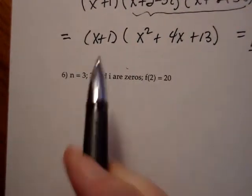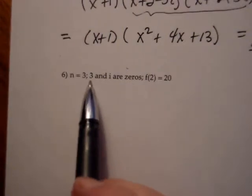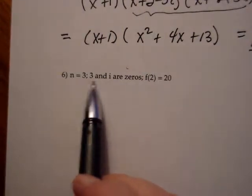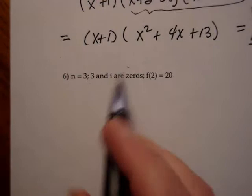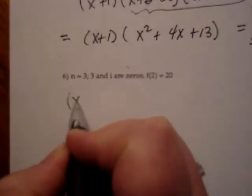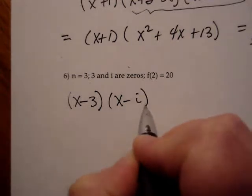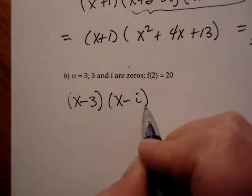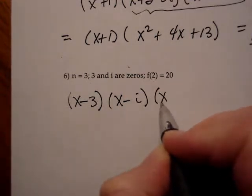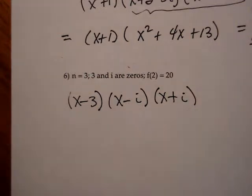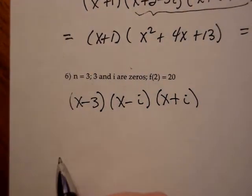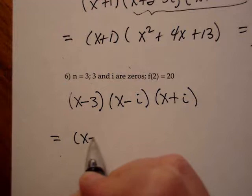It says n equals 3—I need three factors—and they give me two zeros: 3 and i. Remember that means I know that x minus 3 is a factor, that x minus i is a factor, and what's the conjugate of i? Negative i. So x plus i is a factor.